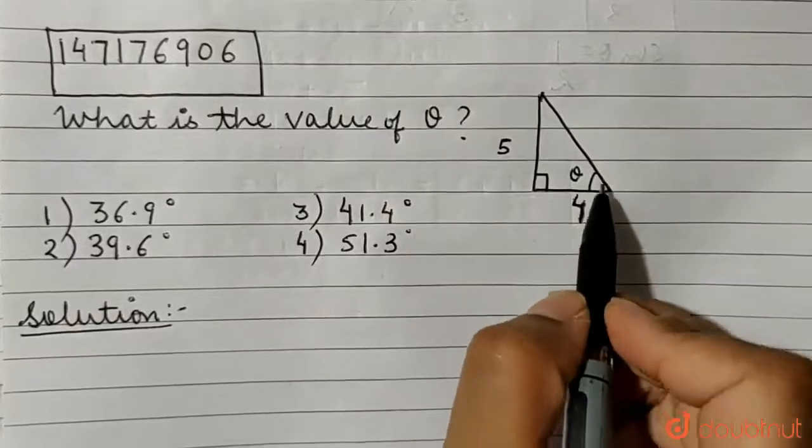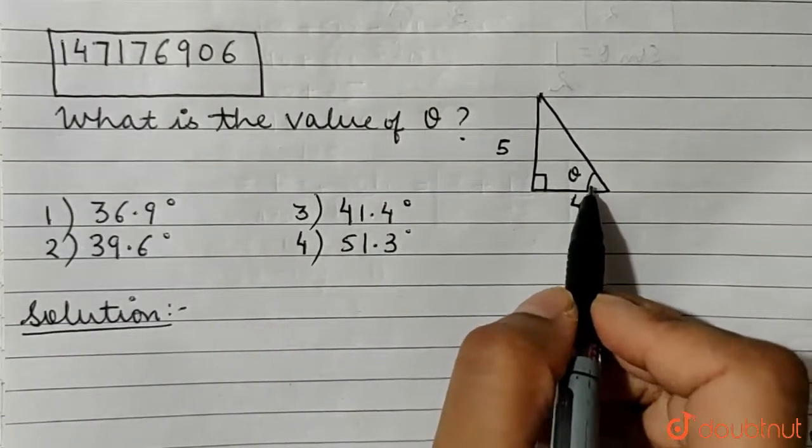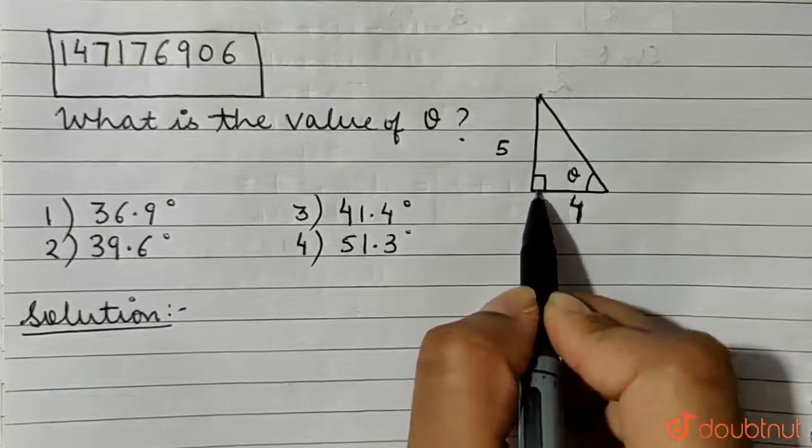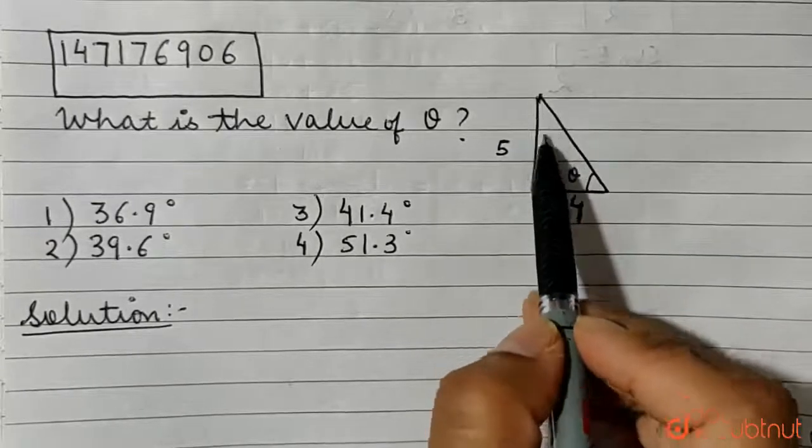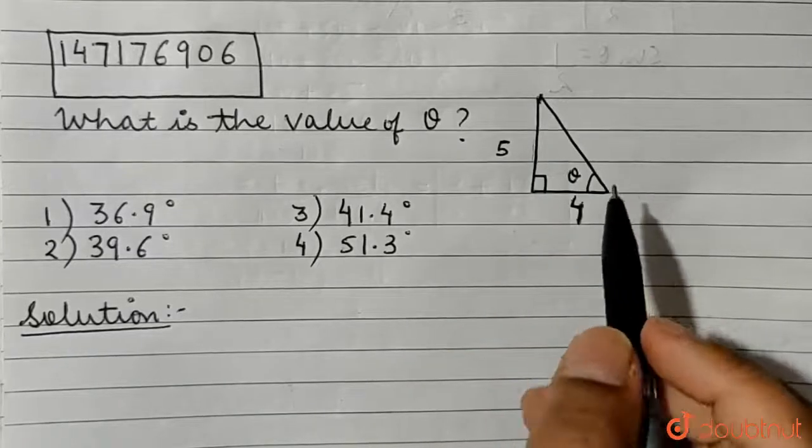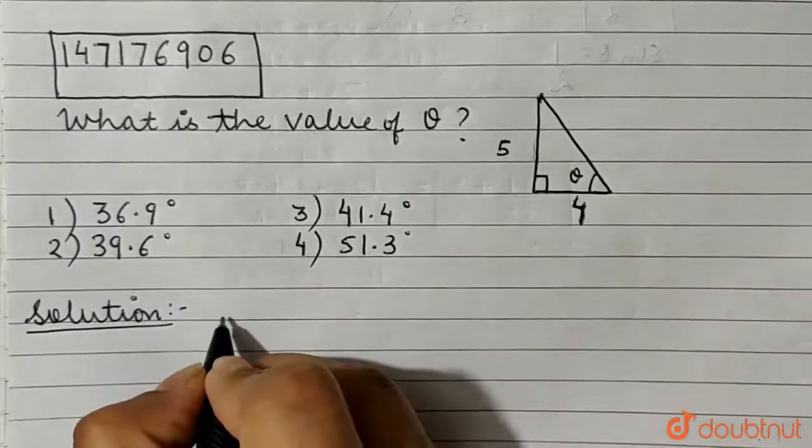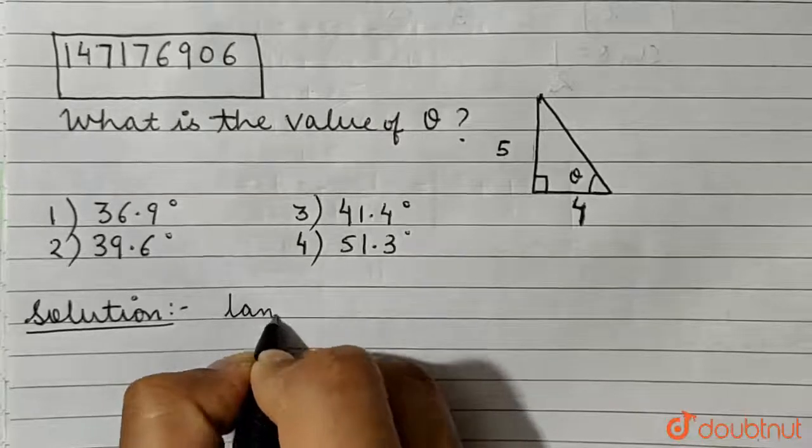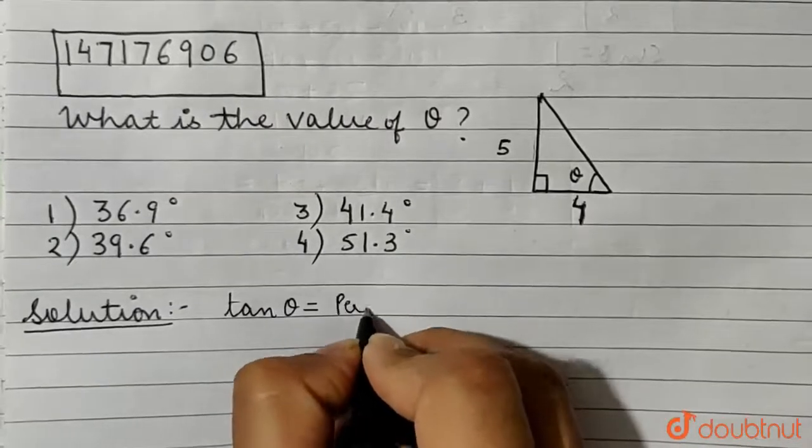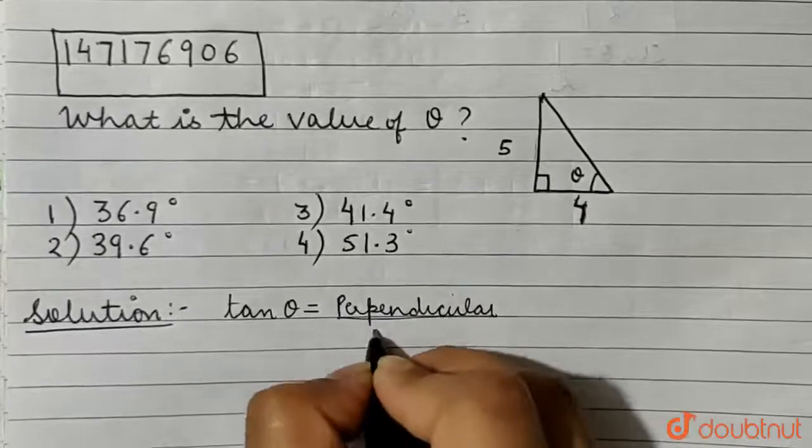Now, since theta is located here in the figure, this side which has been marked 4 is the base, this side is the perpendicular, and this is the hypotenuse. So we can use the tangent of an angle, and we have tan theta equals perpendicular upon base.